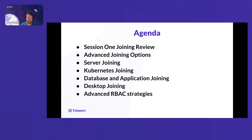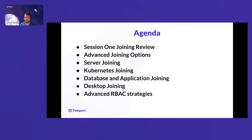A quick review of today's agenda: we'll start with an overview of concepts from session one to set the stage. We'll cover all advanced joining options and the different tokens you can use. We'll cover each resource type — servers, Kubernetes, databases, apps, and desktops — the similarities and differences between them. Then we'll wrap up by diving into advanced RBAC strategies, looking at how you take attributes and claims from your SSO all the way through Teleport, providing user access in a templatized manner.